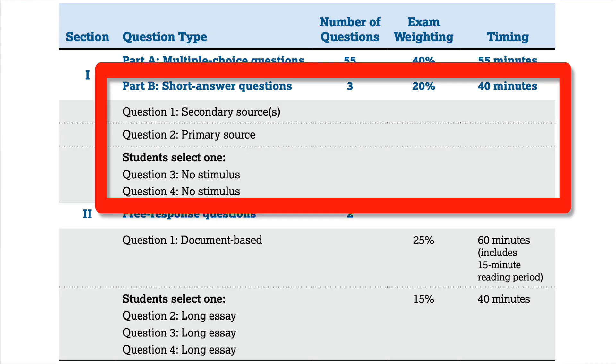That timer should be running in your head the whole time. Next up, Part B: the short answer questions, a.k.a. the SAQs. With the multiple-choice questions behind you, you now have 40 minutes to complete three SAQs. You remember these from class, hopefully. These are the ones with Part A, Part B, Part C. They'll ask you to identify, describe, explain.